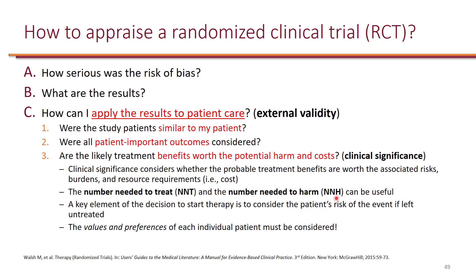Number needed to treat and number needed to harm are not directly equivalent when you compare the numbers. For example, if the number needed to treat is 50 and the number needed to harm is 40, you cannot simply say harm outweighs benefit — you have to use these numbers in context. If NNT of 50 is for mortality and NNH of 40 is just for a headache, it's acceptable to cause more headaches in favor of saving a life. These are just tools to help you make a clinical decision.